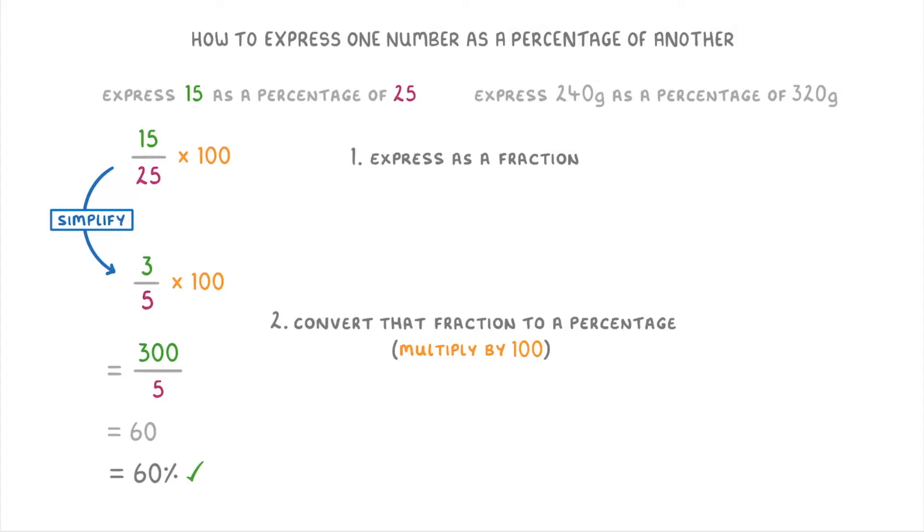For this next one, where we need to express 240 grams as a percentage of 320 grams, we do exactly the same thing. It doesn't matter that these ones have units, we just take the numbers. So we do 240 over 320 to express it as a fraction. Then we multiply that by 100 to convert it into a percentage, which will give us 75. So our answer is 75%.